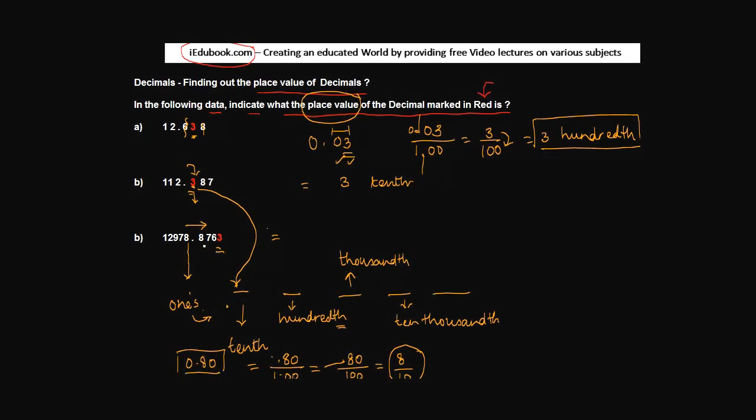Now in this question if you notice, 3 is at what place? 1, 2, 3, 4. Fourth from the left. And fourth from the left is 1, 2, 3, 4. Ten-thousandth place. So what will be the place value of 3? The place value of 3 will be 3, 10 thousandth.